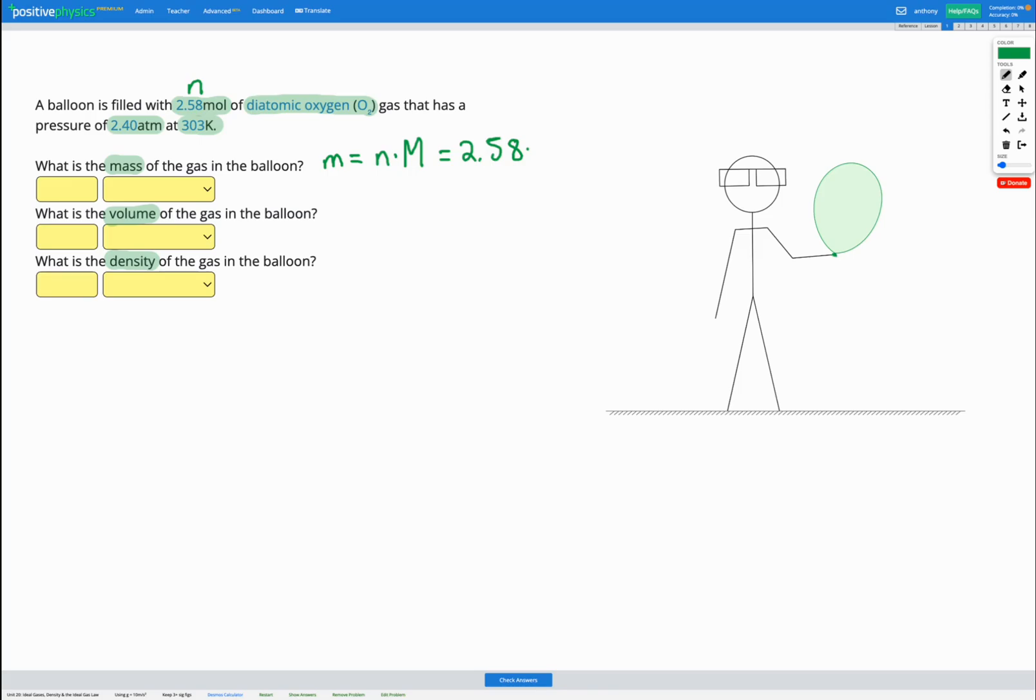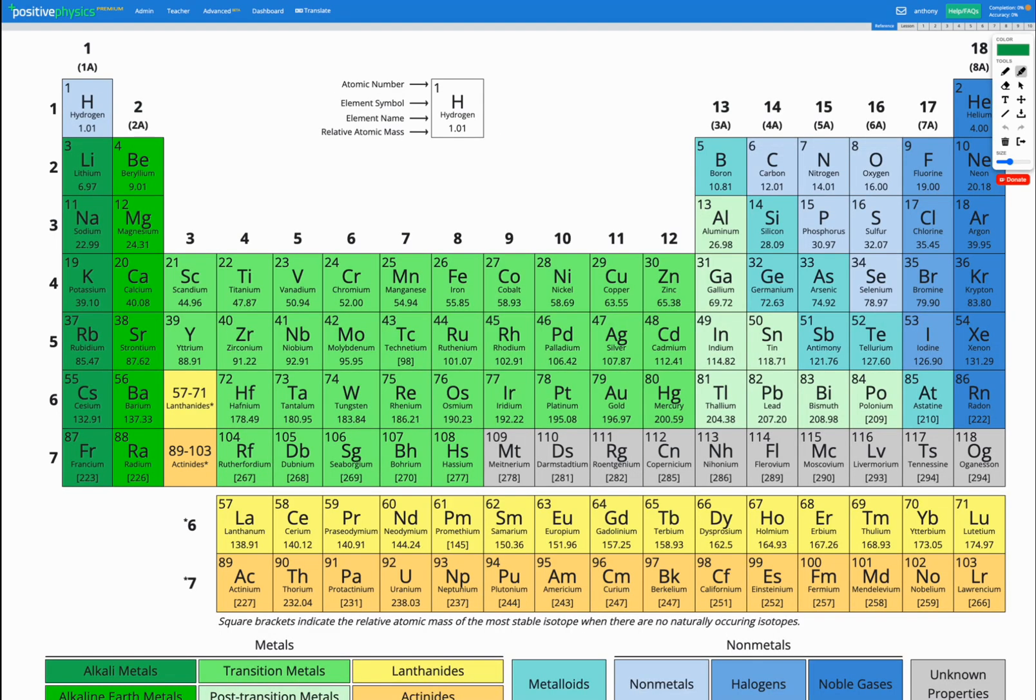That is our molar mass of our substance, which is diatomic oxygen. So we want to find the molar mass of diatomic oxygen. We've got two oxygen atoms in a diatomic oxygen, so let's head to our reference sheet. Here's our periodic table. We're looking for oxygen, and here it is.